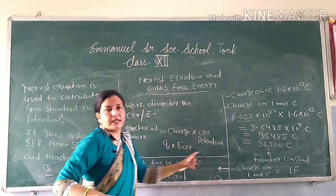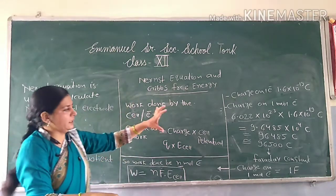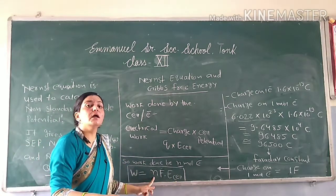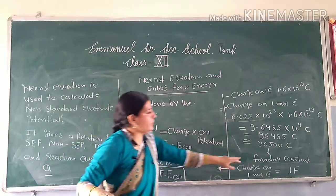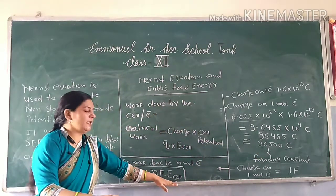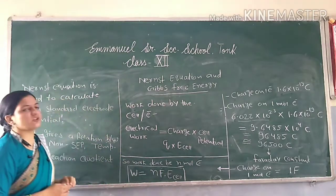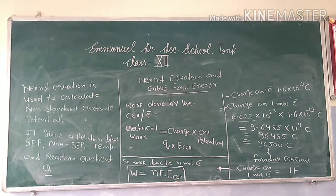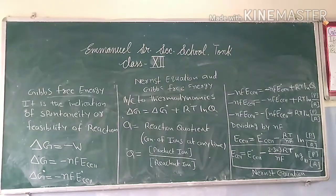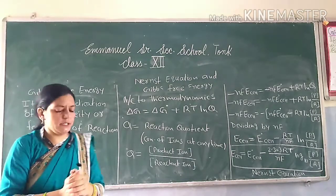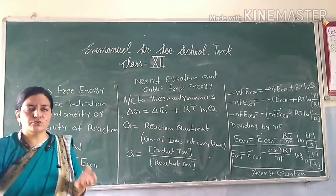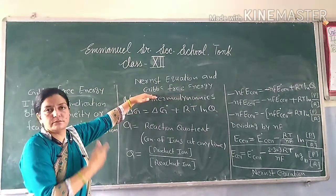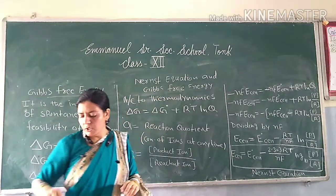You have to understand these things and write them in your exam. The formula for work done is nFE_cell, where n is the number of moles of electrons, F is the Faraday constant whose value is 96,500 coulombs, and E_cell is the cell potential. Now, this work done is related to Gibbs free energy.